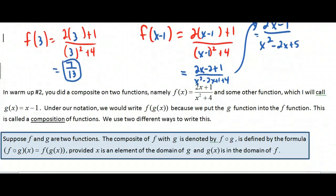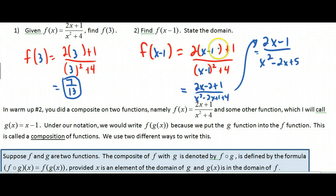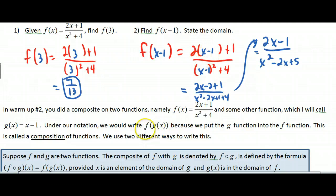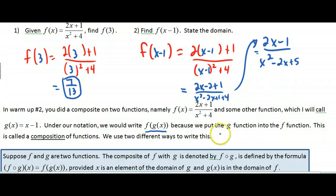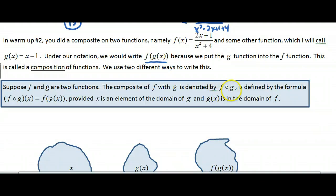What we just did was a composition of functions. I took the F function and the G function — specifically X minus 1 — and put it inside F. When writing this out, set up big parentheses: it's the same as plugging in a number, but now you're plugging in X minus 1. This is taking G and plugging it into F. How we write this is the funny part — it's written as F of G, using composition notation with a small circle.